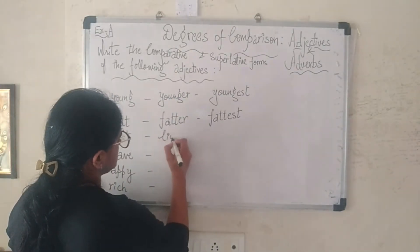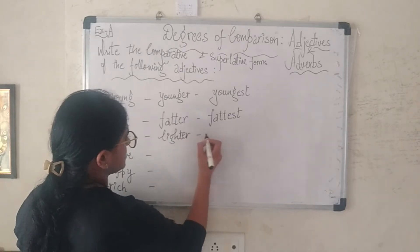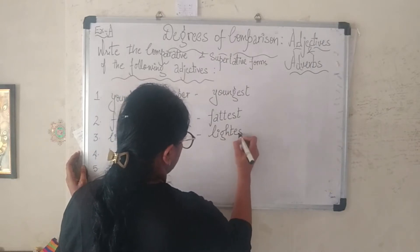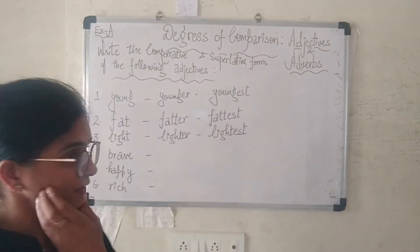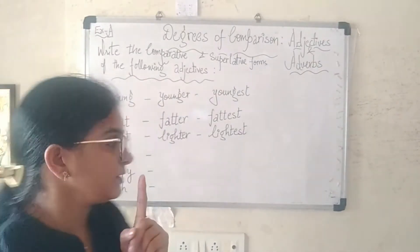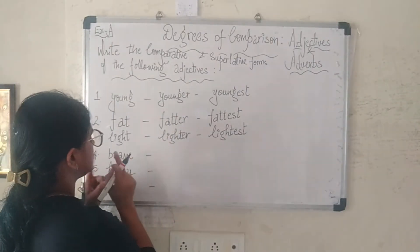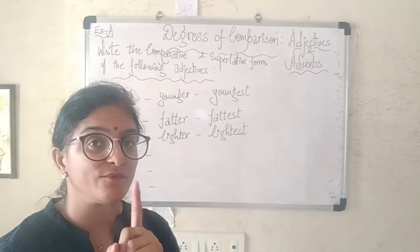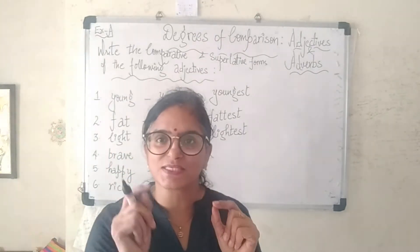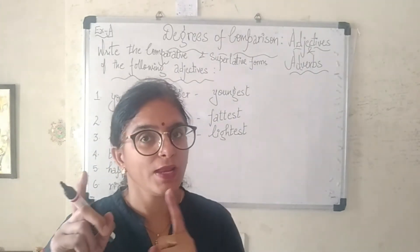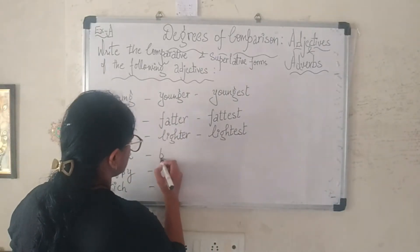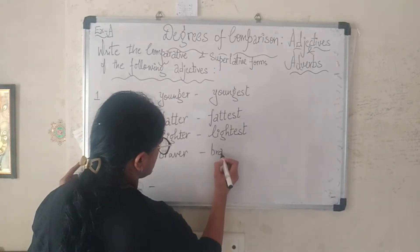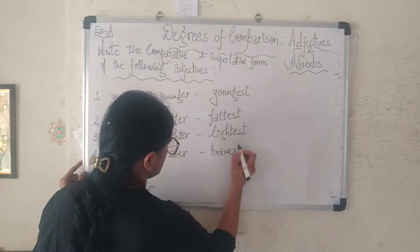Now we move on to the third adjective: 'light' (l-i-g-h-t). It is 'lighter' and 'lightest'. The fourth adjective is 'brave'. Remember, when the word ends with 'e', you do not add 'er' — just add 'r' in the comparative form and 'st' in the superlative form. So the answer is 'braver' and 'bravest'.